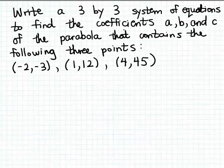In this example, we want to write a system of equations that we can use to find the coefficients a, b, and c of the formula of the parabola that passes through the following three points. The coordinates for those three points are (-2, -3), (1, 12), and (4, 45).